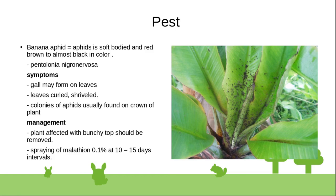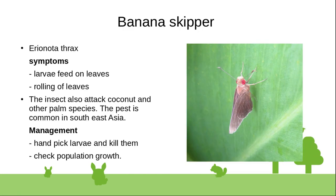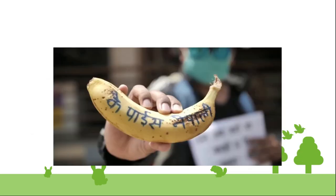Banana skipper (Erionota thrax) is a pest where larvae feed on and roll leaves. The insect also attacks coconut and other plant species and is common in Southeast Asia. Management includes picking larvae and killing them to check population growth.